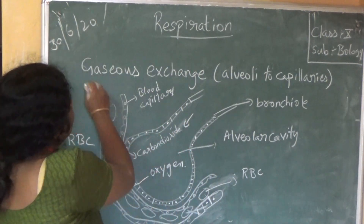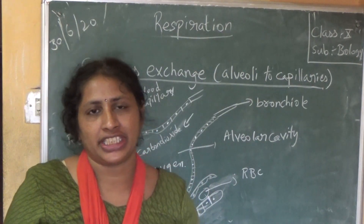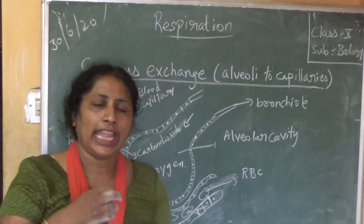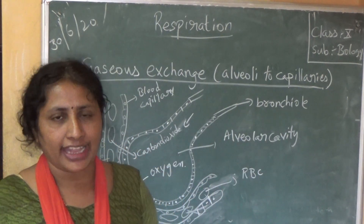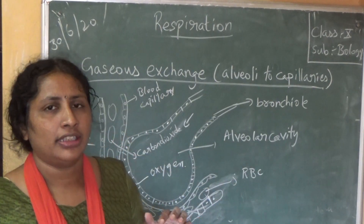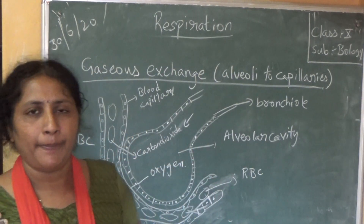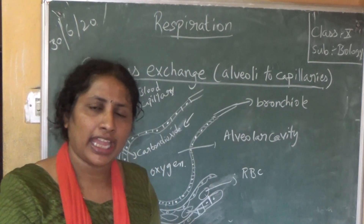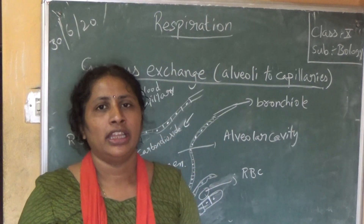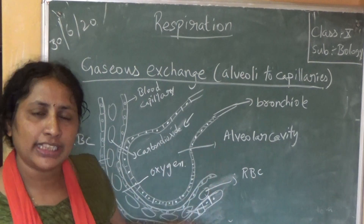Our next topic is gaseous exchange from alveoli to capillaries. How does gaseous exchange take place between alveoli and the blood capillaries? We have seen that air enters from the nostrils and the last part is the alveoli. Now the alveoli is rich in air. Oxygen present in the air enters into the blood, and blood gives carbon dioxide back to the alveoli. So blood brings carbon dioxide from all body parts and gives it to the alveoli, while oxygen from the alveoli is taken by the blood.